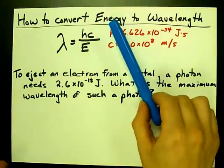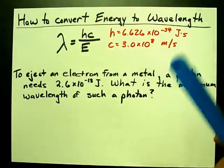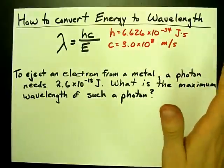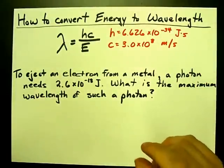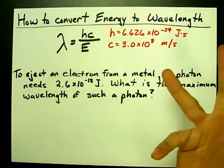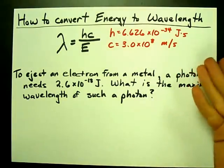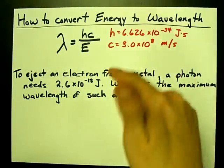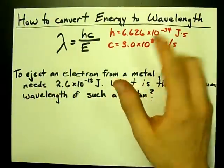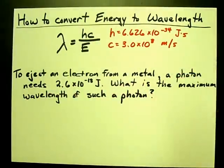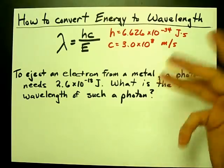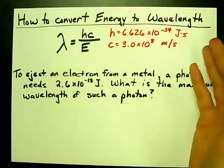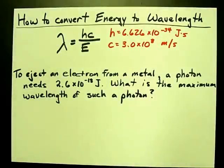How do you convert from an energy of a photon into a wavelength? This is a particularly common question when you're studying the photoelectric effect, which talks about ejecting electrons from metal. To eject an electron from a metal, a photon must have a certain energy. In this case, 2.6 times 10 to the minus 18. What's the maximum wavelength of that photon? That is, what's the wavelength that corresponds to that energy?